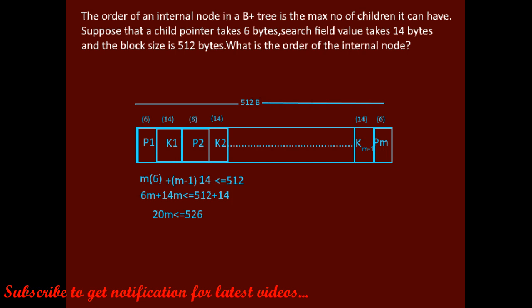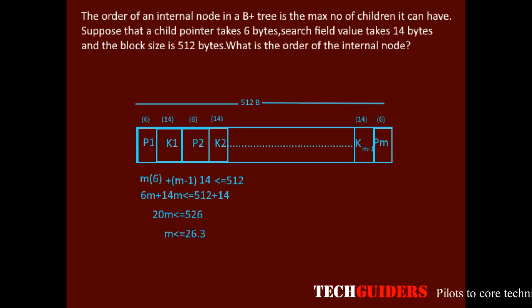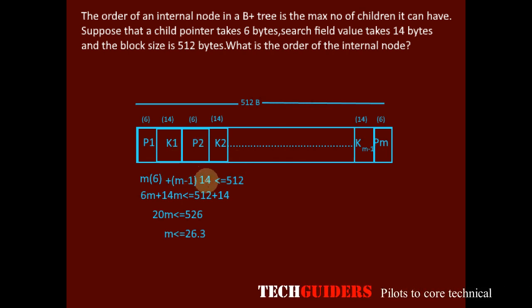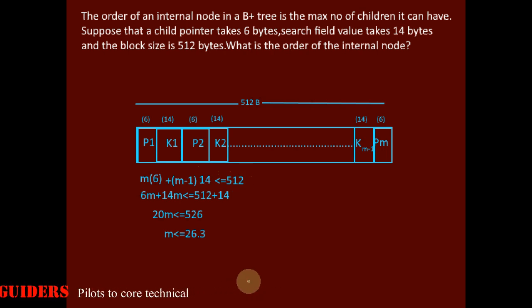It means 20m should be less than or equal to 526. Hence the value of m should be less than or equal to 526/20 = 26.3. We should take the floor value. If m is 27, then the total size required will be greater than 512. So the maximum number of children possible, or maximum value for m possible, is 26.